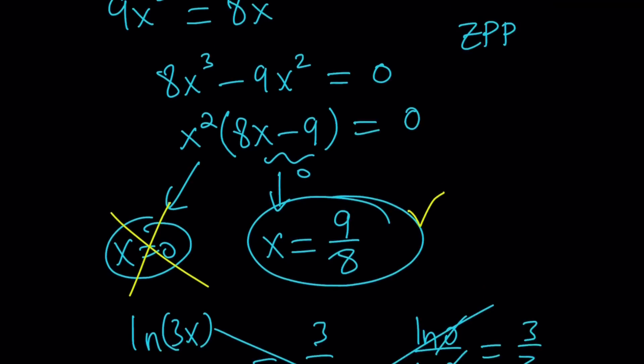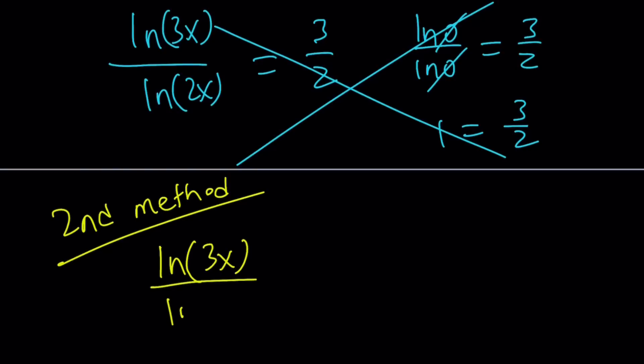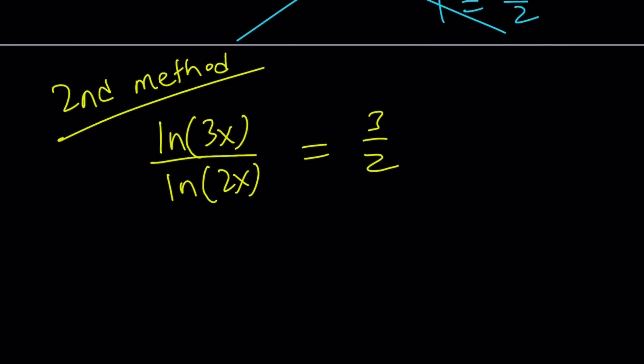So, second method. Anyways, this is good because now you get to see two methods. Let's rewrite the problem. ln(3x) over ln(2x) equals 3 over 2. So what can I do? Well, I can go ahead and expand ln(3x) and ln(2x) because when you have the log of a product, like ln(AB) can be written as ln A plus ln B. I mean, of course, A and B both have to be positive in order for this to be true. That's why a lot of times people are going to use absolute values, but I don't like using absolute values. Because it just looks ugly. Anyways, it's just personal opinion. You may not agree with that.